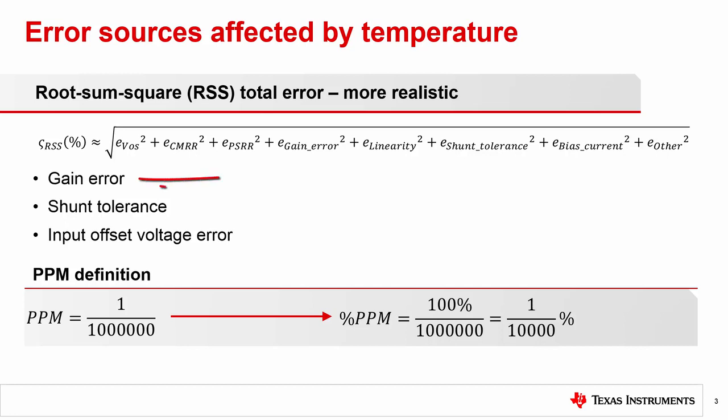The relevant error terms include gain error, shunt tolerance, and input offset voltage error.